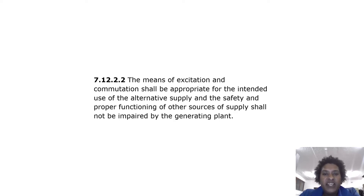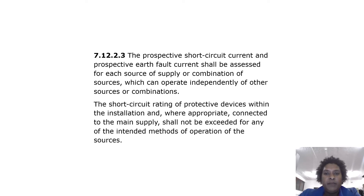All forms of alternative devices such as inverters shall comply with the requirements of 6.16.1. The means of excitation and commutation shall be appropriate for the intended use, and the safety and proper functioning of other sources of supply shall not be impaired by the generating plant. The prospective short circuit current and prospective earth fault current shall be assessed for each source of supply or combination of sources which can operate independently.